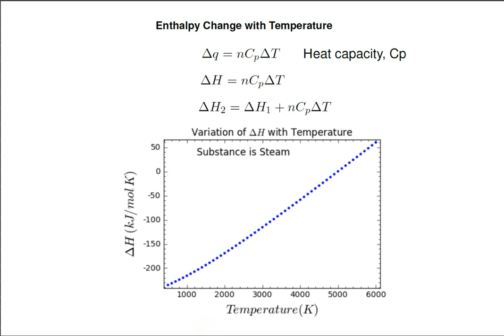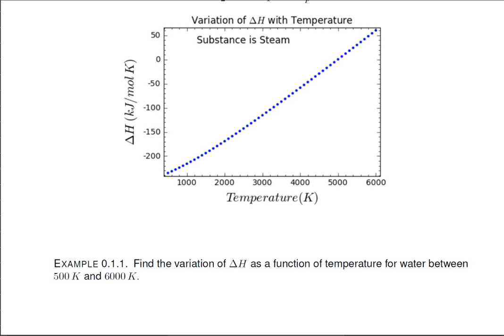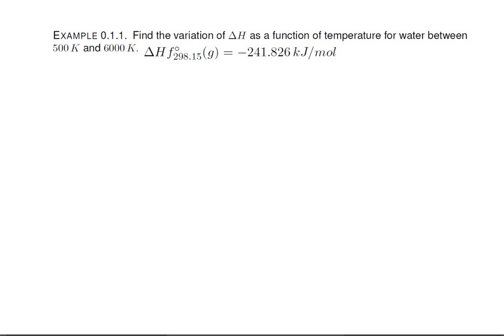Fortunately, there is a way to calculate delta H at some second temperature by using the tabulated Cp values. We can do an example with steam, and since we have delta H values for steam already graphed, we can look and see how much error there might be in the method. Our example reads, find the variation of delta H as a function of temperature for water between 500 K and 6000 K. For reference, delta H of 298 is minus 241.8 kilojoules per mole.